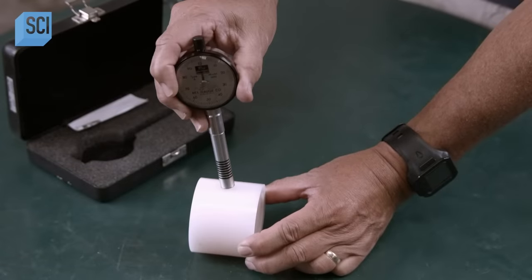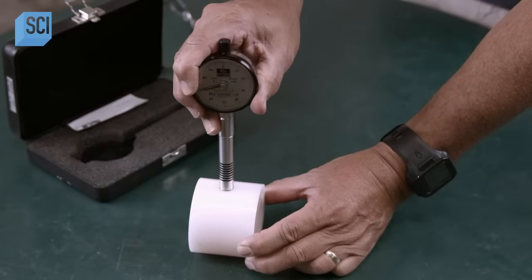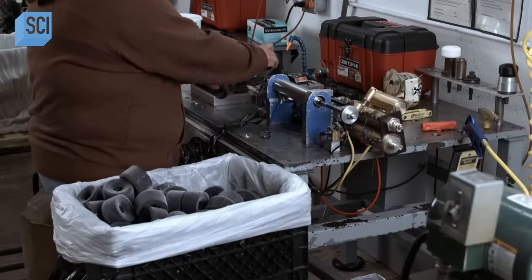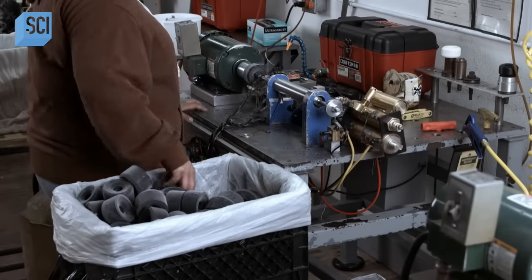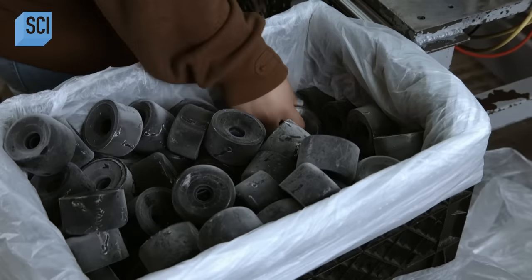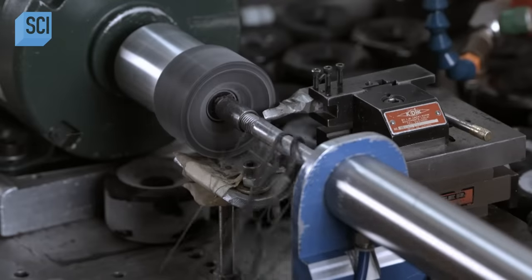He probes the wheel using a durometer gauge to ensure the urethane has cured to the proper hardness. If the sample wheel is sufficiently hard, the batch is ready for the next step. The worker clamps the skateboard wheel in a lathe.